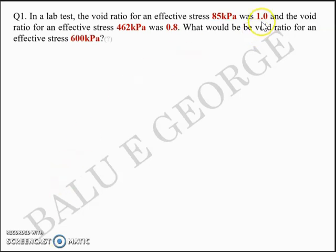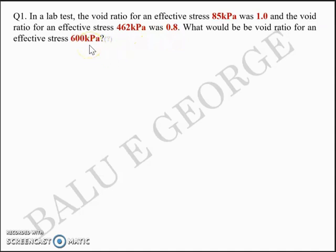So initially you have a soil whose void ratio is 1 at effective stress 85, and as the effective stress increases to 462, the void ratio turns out to be 0.8. You are asked to find the void ratio for an effective stress — let's mark it sigma 3 — at 600 kilopascal.